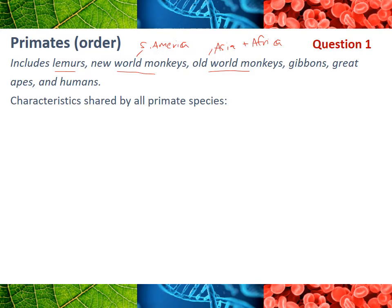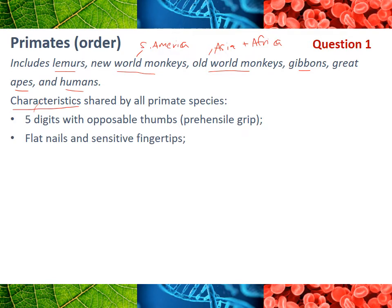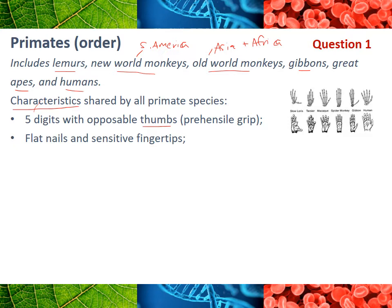We also have gibbons, great apes, and humans - they all fall under the classification of primates. The first part of the dot point covers characteristics shared by all primate species. All primates have five digits on both the hands and feet with a prehensile grip - meaning the ability to grip onto something and hold it. In humans that occurs primarily in the hands because we have thumbs; other primates can also grip with their feet to hold onto branches. We also have flat fingernails and toenails, and sensitive fingertips.